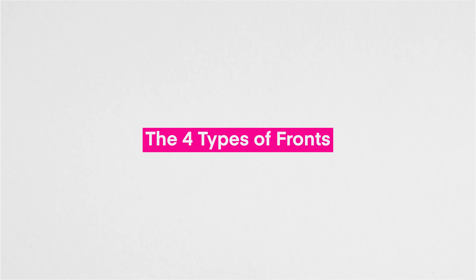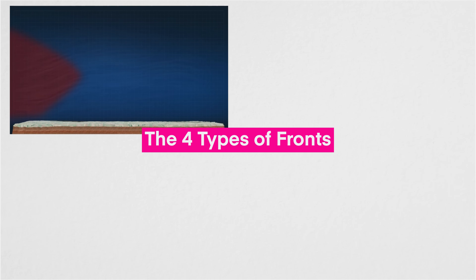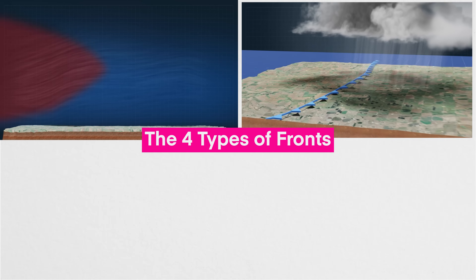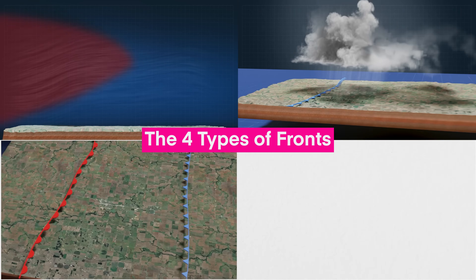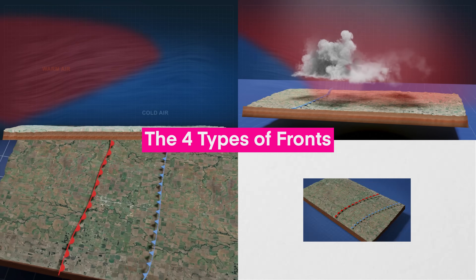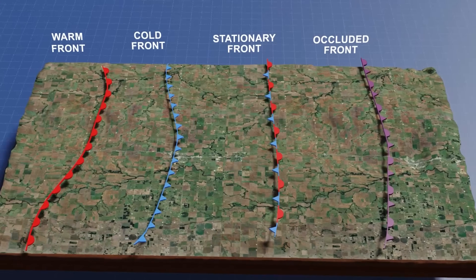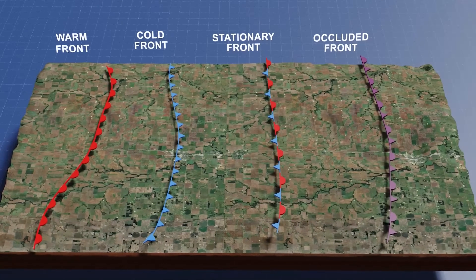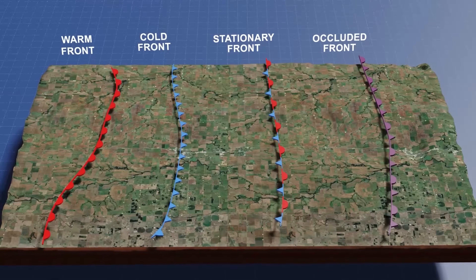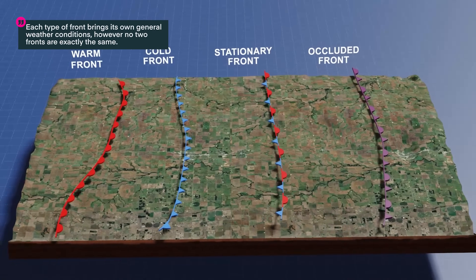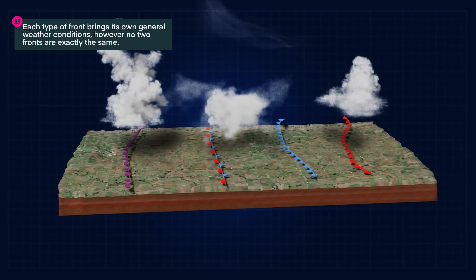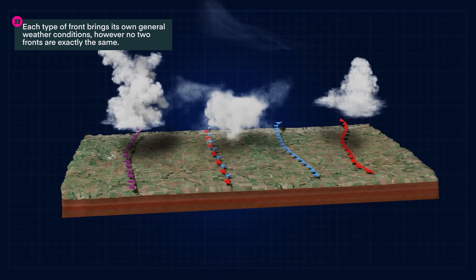There are four types of fronts: warm fronts, cold fronts, stationary fronts, and occluded fronts. Each type of front brings its own general weather conditions. However, no two fronts are going to be exactly the same.